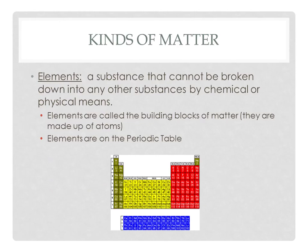A few examples of elements include helium, which has the atomic symbol He; copper, which has the symbol Cu; and chlorine, which has the symbol Cl. We'll become very familiar with these elements over the next few weeks, and eventually you'll start memorizing some on your own.